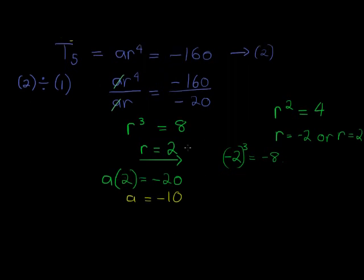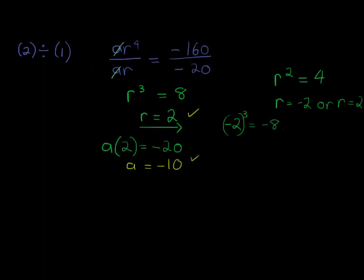And there I go, I've found my constant ratio and my first term. Well done. Now they ask me for term 8. Again, quite easy. All I do is I just use my general term now: my general term being a which is negative 10 times r which is 2 to the power of n minus 1, which is 8 minus 1.